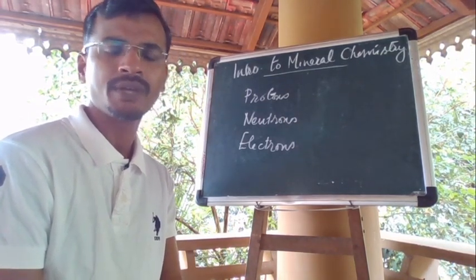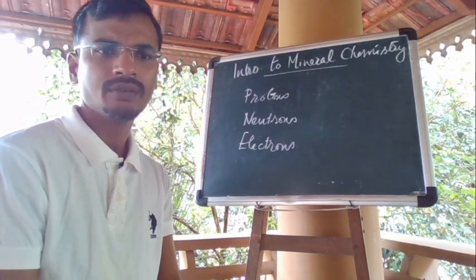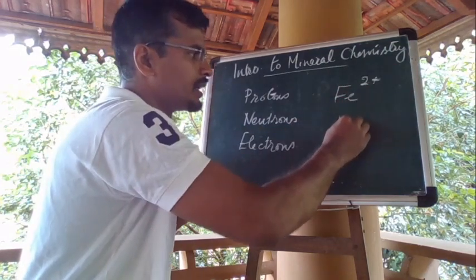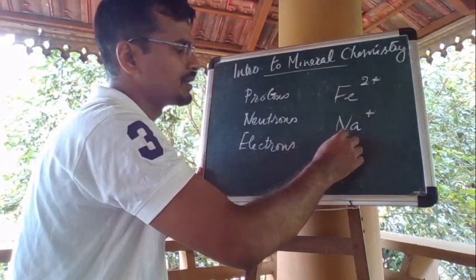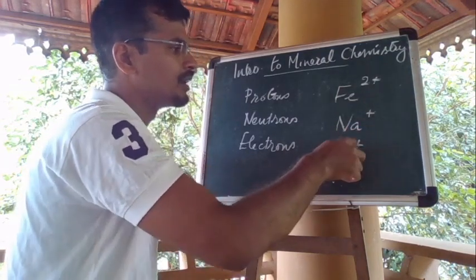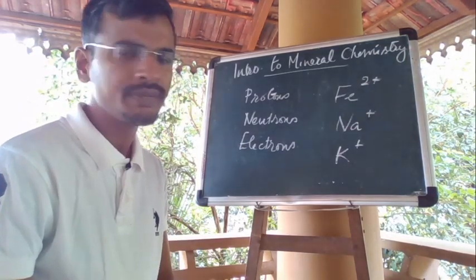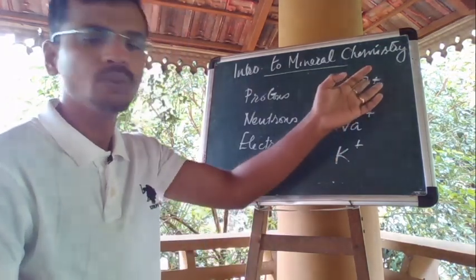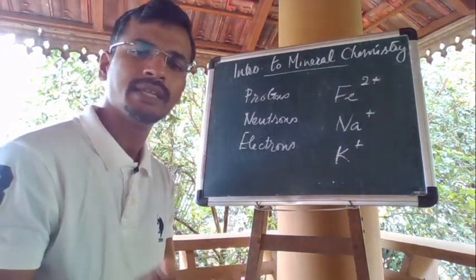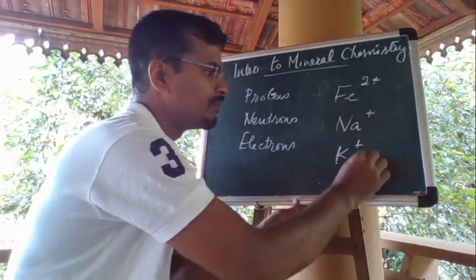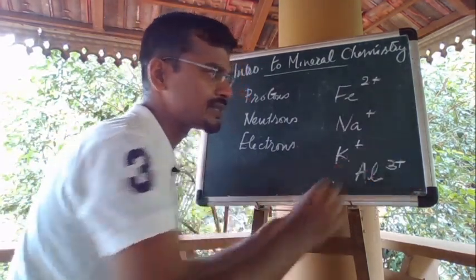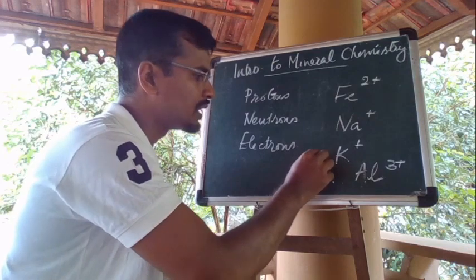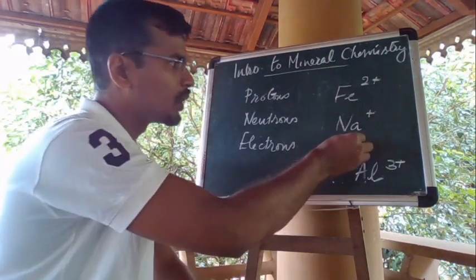The ionic charge, also called the valence, is the number of protons minus the number of electrons. It is represented by a superscript number after the elemental symbol — for example, Fe2+ for iron or Na+ for sodium. All ions with a plus or minus one charge are monovalent; plus or minus two is divalent. Aluminium has a charge of 3+ so it is trivalent, and silicon has a charge of 4+ so it is tetravalent.